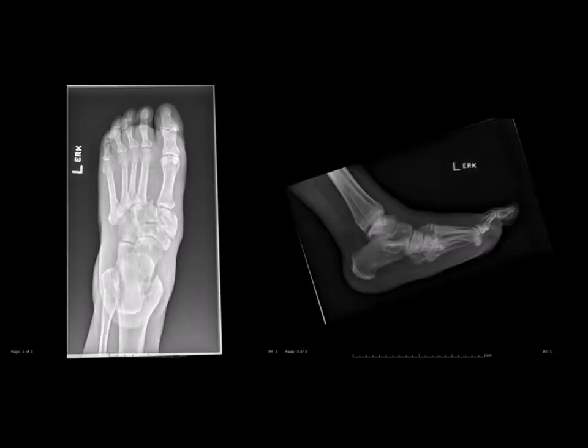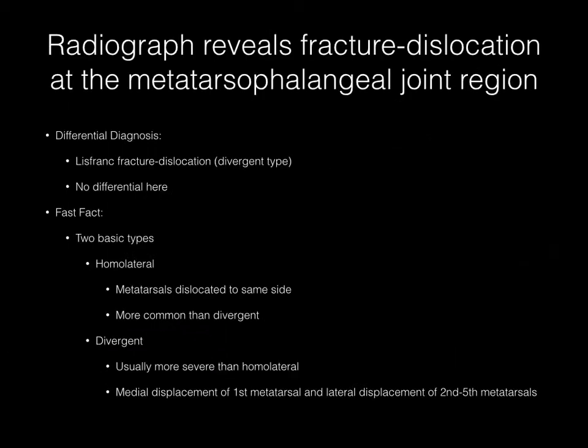Now pause your media player. Two radiographs demonstrate a fracture dislocation in the metatarsophalangeal joint region with medial displacement of the first metatarsal bone and lateral displacement of the second through fifth metatarsal bones. The diagnosis here is Lisfranc fracture dislocation, the divergent type.